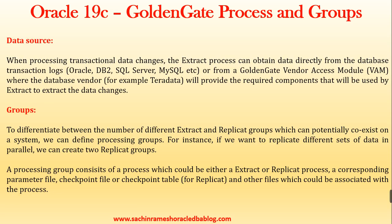When processing transactional data changes, the extract process can obtain data directly from the database transaction logs — Oracle, DB2, SQL Server, MySQL, etc. — or from a GoldenGate Vendor Access Module (VAM), where the database vendor provides required components used by extract to capture data changes. To differentiate between multiple extract and replicate groups co-existing on a system, we can define processing groups. For instance, to replicate different sets of data in parallel, we can create two replicate groups. A processing group consists of a process — either extract or replicate — a corresponding parameter file, checkpoint file or checkpoint table, and other associated files.